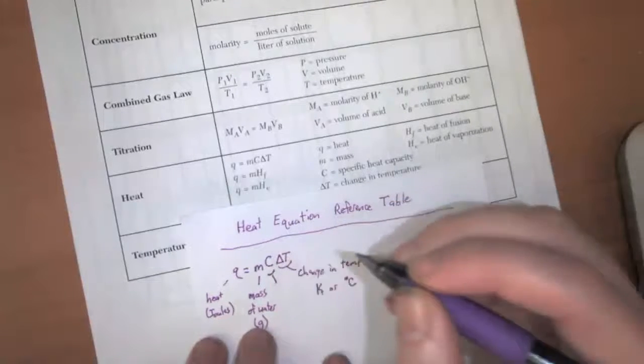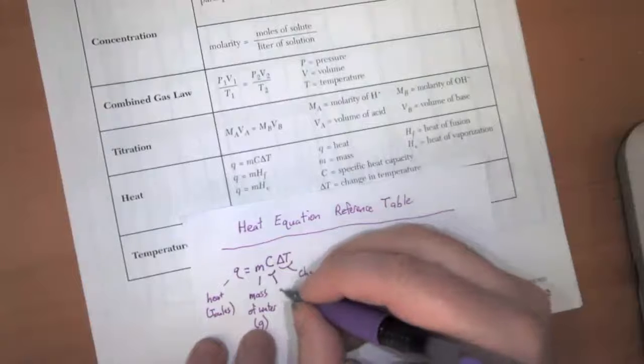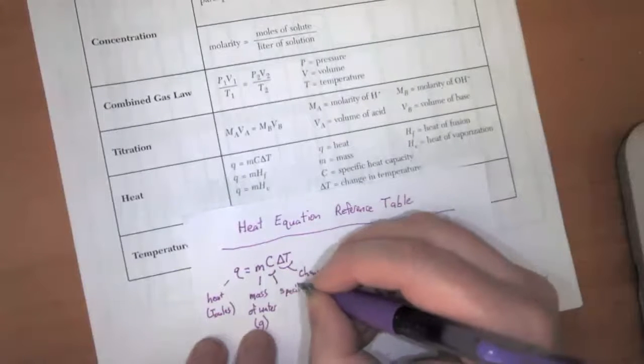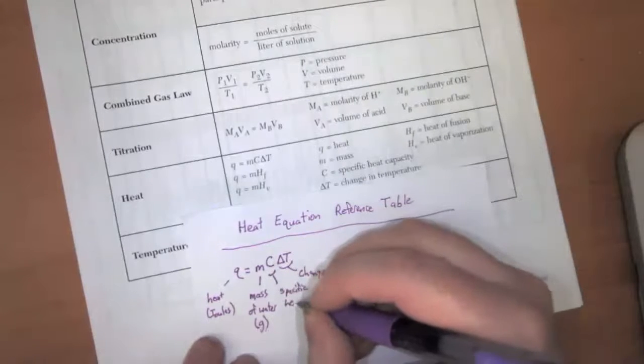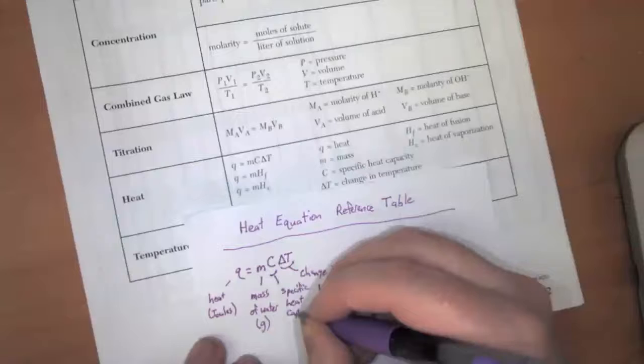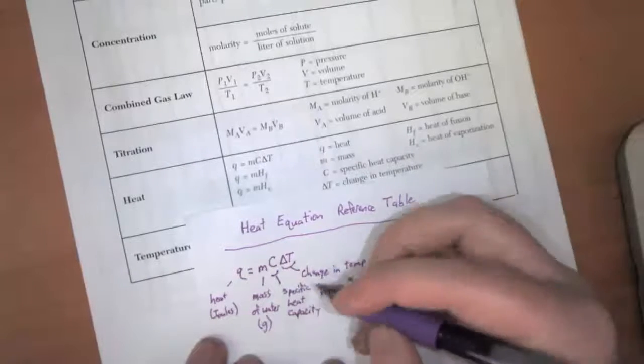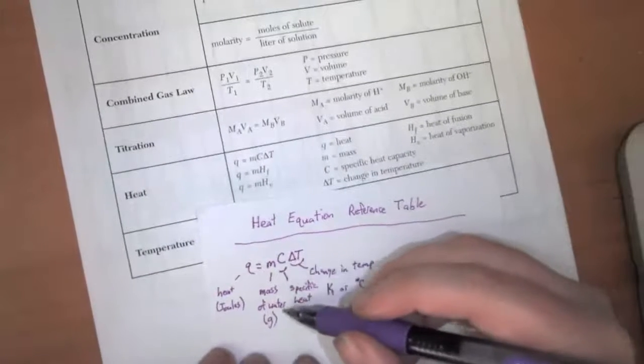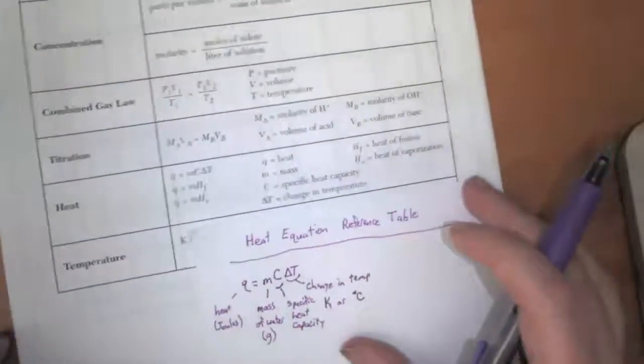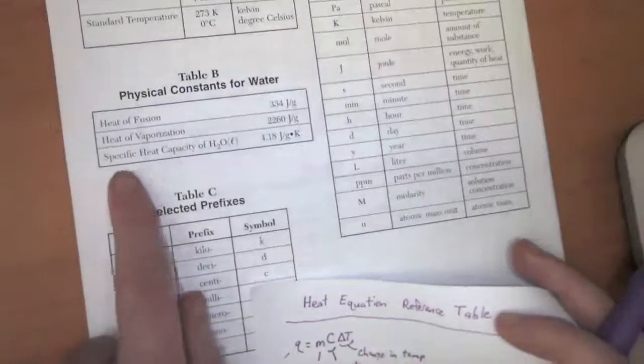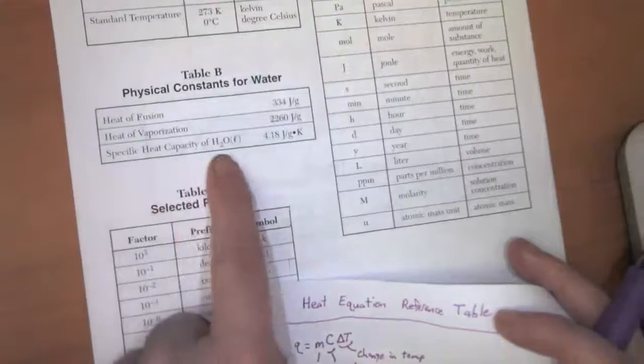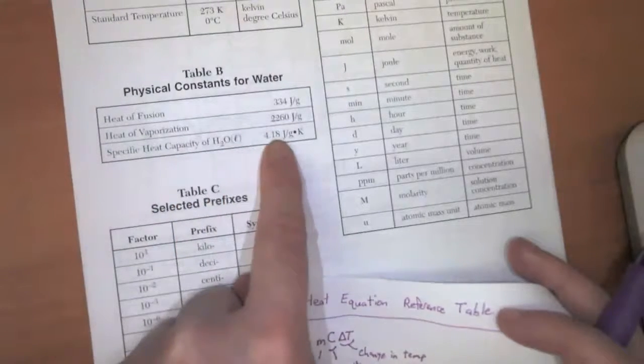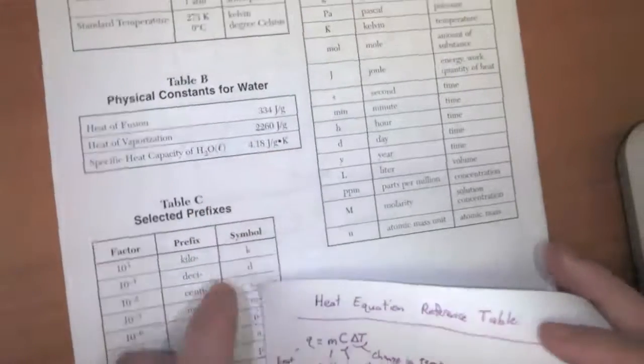And then C is what we call the specific heat capacity, which is just talking about something special about the way that liquid water behaves when you heat it up. And so we're going to look at the front of the table and we're going to see that the specific heat capacity of water liquid is 4.18 joules per gram Kelvin.